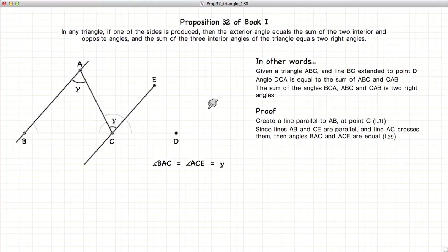Now, according to Proposition 29, we have two parallel lines, AB and CE. So the interior and opposite angles will be equal. So ACE will equal CAB, which is equal to gamma.